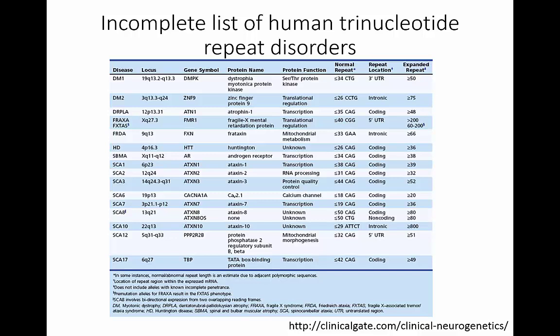There are a few other trinucleotide repeat disorders. The ones with repeat expansion in the coding region are mostly CAGs, so the problem of extra glutamines affects different proteins. Once you reach a threshold of around 35 or so glutamines, you start to get a disease state leading to neurodegeneration. There are also trinucleotide repeats that occur outside the protein coding region of genes, and these often work by inhibiting the function of that protein.